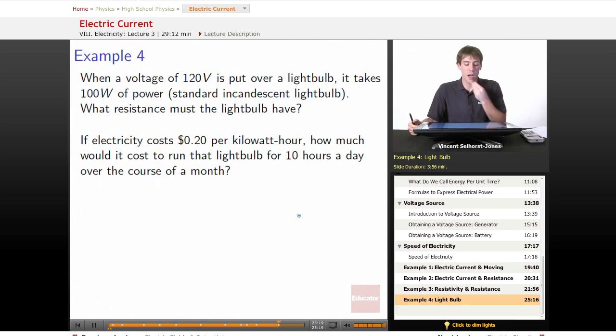Final example, if we've got a voltage of 120 volts and we put it over a light bulb and that light bulb takes 100 watts of power, which is the standard incandescent light bulb, what resistance must the light bulb have?